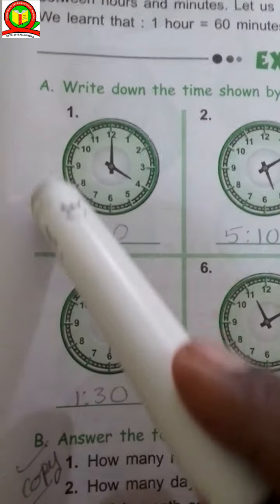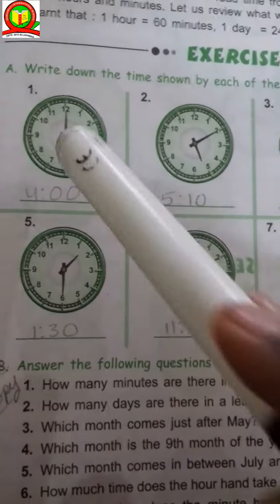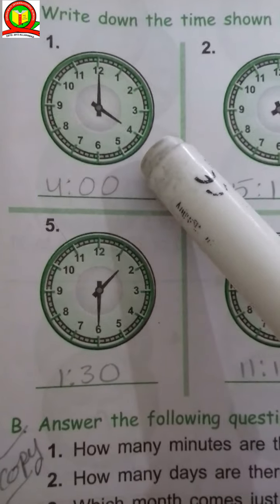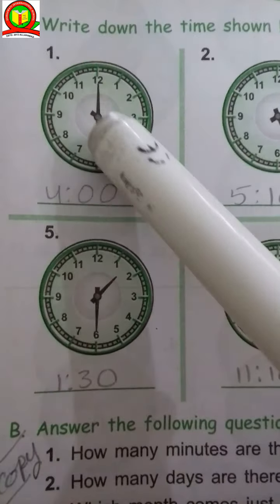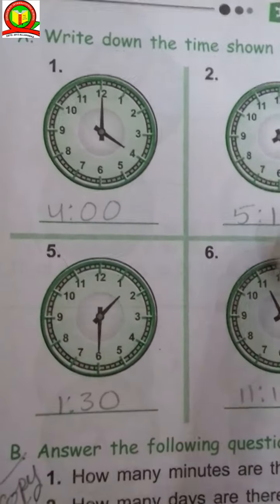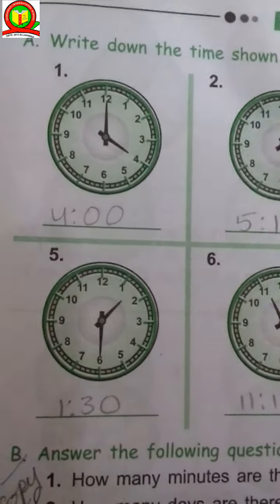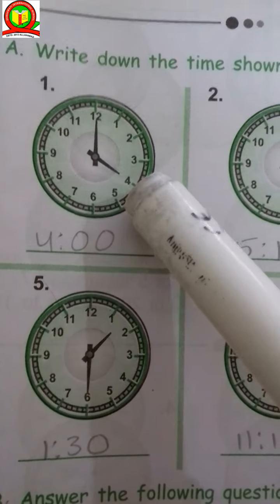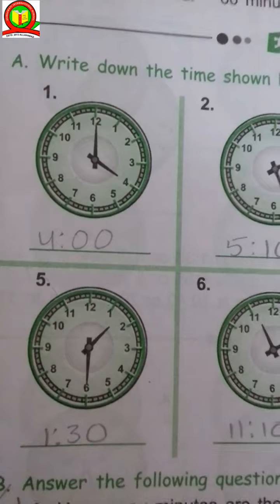Class 4, you can see here it's a dial. Write down the time shown by each of the following clocks. Here it's 4 o'clock. It has 2 hands - short hand and long hand. Short hand is in 4 and long hand is in 12, so it's 4 o'clock.